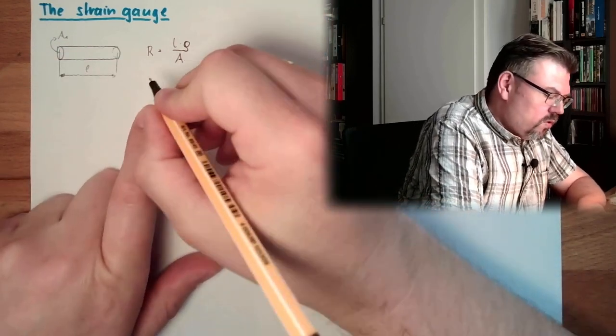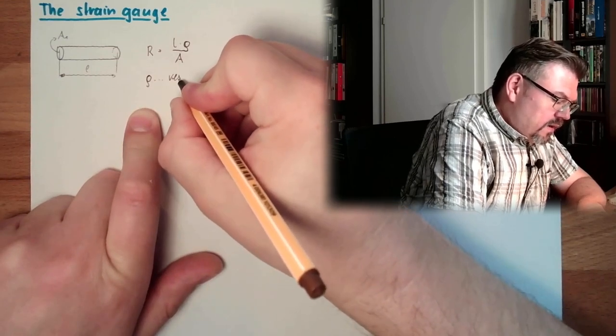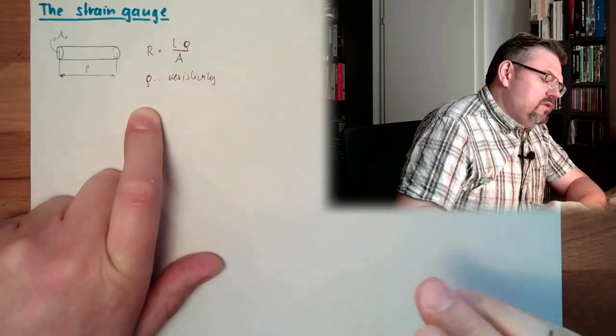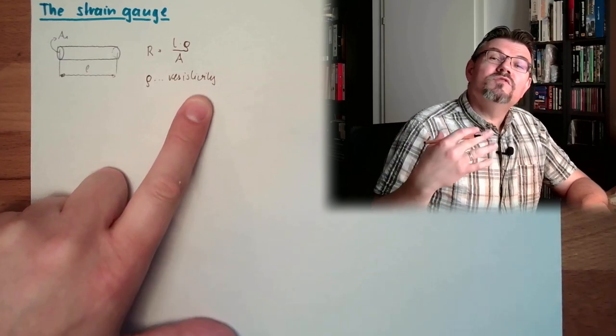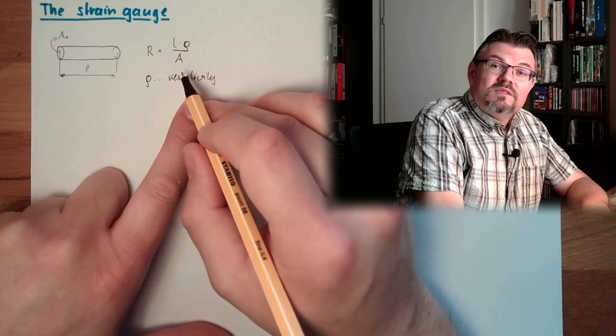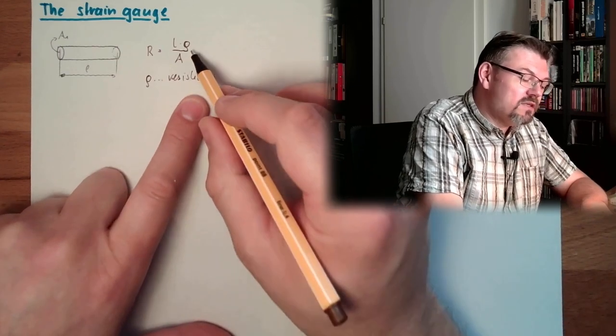And rho, what's this rho? Rho is the resistivity. Spezifischer Widerstand in German, resistivity, how much resistance this material has by meter and square meter. So that's a material constant.